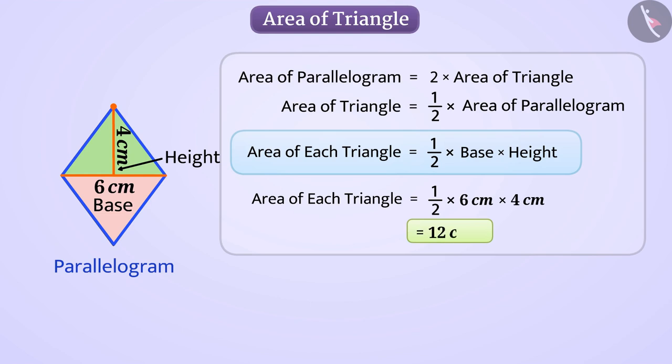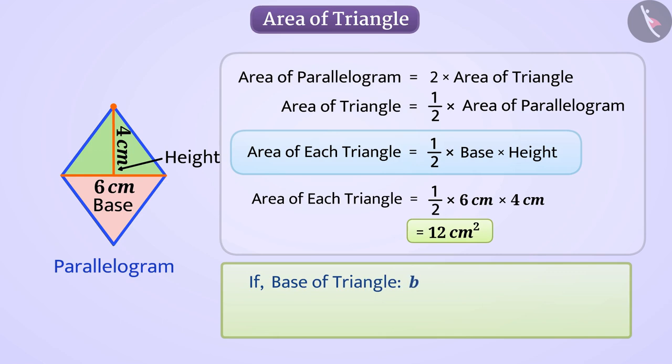12 square cm. If we consider the base of the triangle as b and the height as h, then we can say that the area of the triangle is equal to half multiplied by base multiplied by height, or half bh.